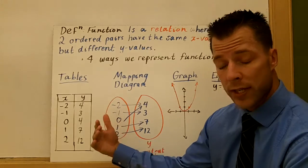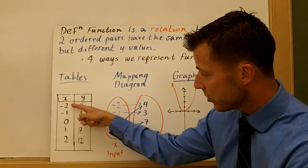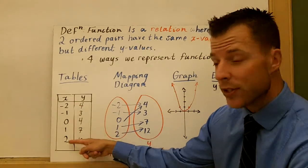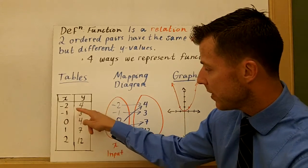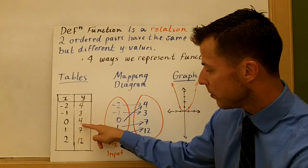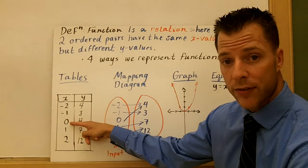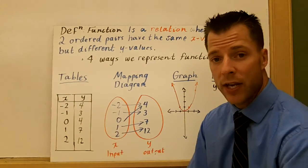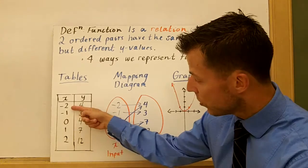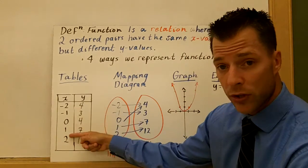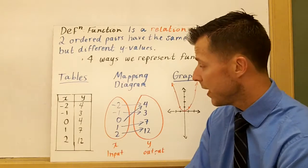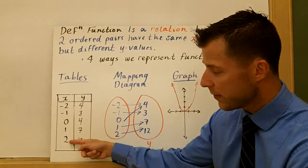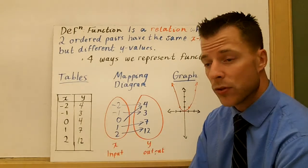So an easy way to see if something's a function from a table, just look at all your x values here. They're all different. That means you have a function. Now if you look at negative two and four and zero and four, you have two different x values going to the same y value. That's okay. You just don't want to see an x value repeat or you won't have a function then.